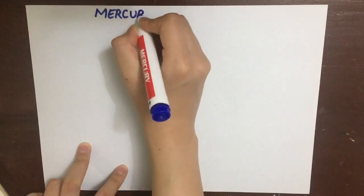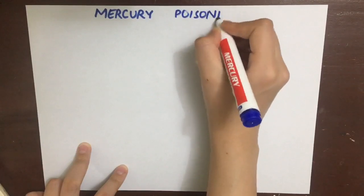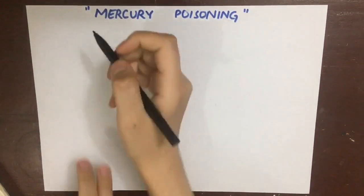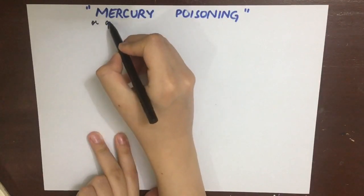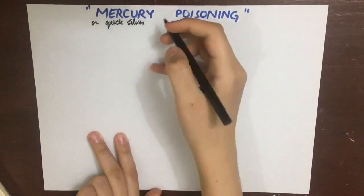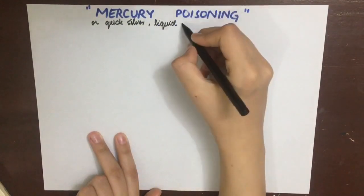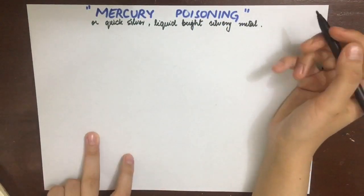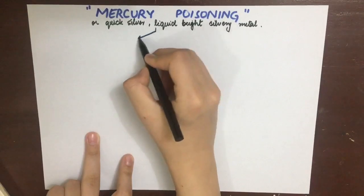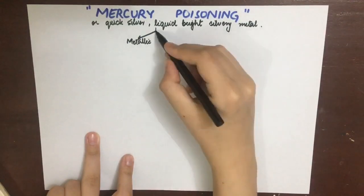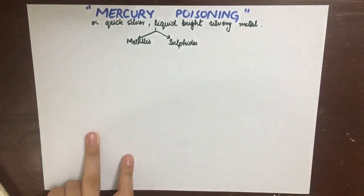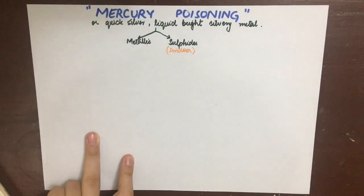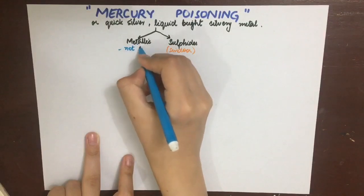Let's talk about mercury poisoning. Mercury is also known as quicksilver and is a liquid metal with a bright silvery luster. Mercury can exist in two forms: one is its metallic form and the other is the sulfide form, also known as cinnabar or Sindhu. The metallic form is not poisonous because it is not absorbed.